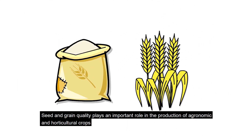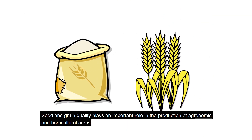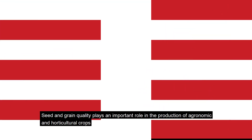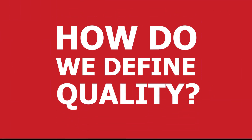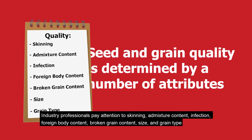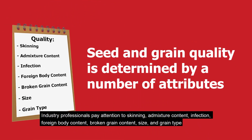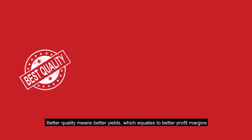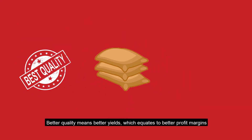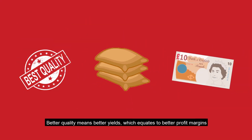Seed and grain quality plays an important role in the production of agronomic and horticultural crops. But how do we define quality? Industry professionals pay attention to skinning, admixture content, infection, foreign body content, broken grain content, size and grain type. Better quality means better yields, which equates to better profit margins.